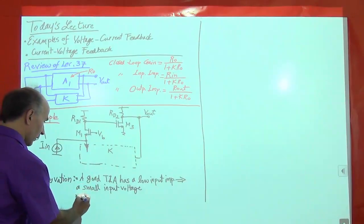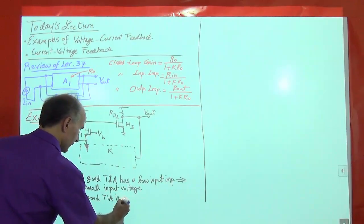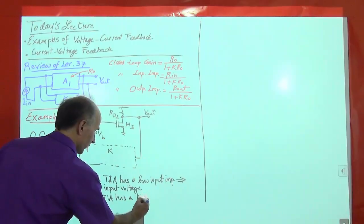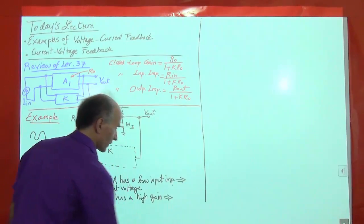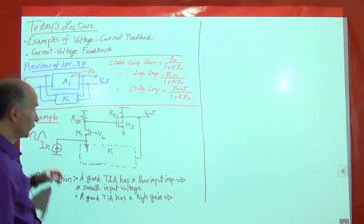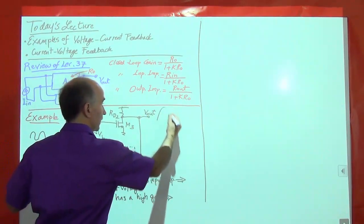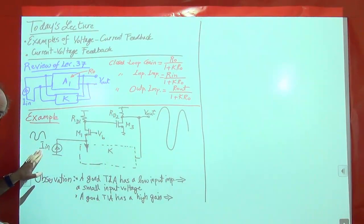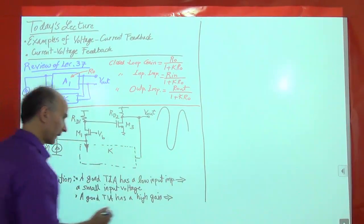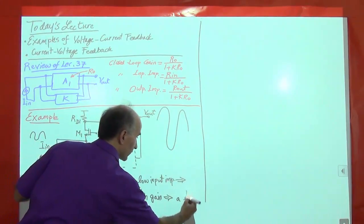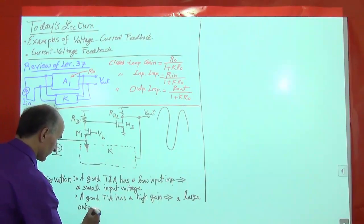A good TIA also has a high gain, which means it generates a large voltage swing at the output. We give it a small sinusoidal current at the input and get a big sinusoidal voltage at the output — it has a high gain, so a large output voltage.